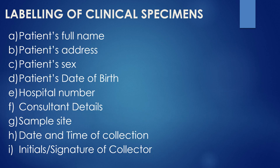Finally, labeling of clinical specimens. Each clinical sample must have a label firmly attached to the specimen container bearing the following information: patient's full name, patient address, patient's sex or gender, patient's date of birth, hospital number, consultant details, sample site, date and time of sample collection, and the initial or signature of the sample collector.